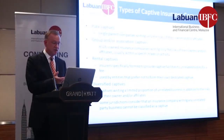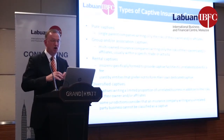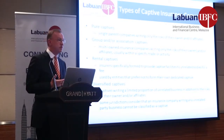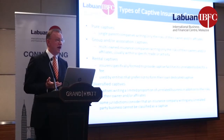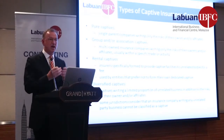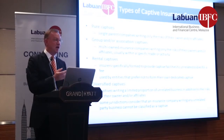Then there are group captives — insurance companies or risk-bearing entities owned by a group or association. In the marine insurance business, one of the most famous examples are P&I clubs, where ship owners come together, mutualize risk, and collectively own that insurance entity.